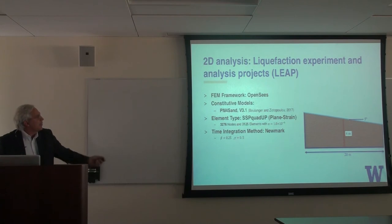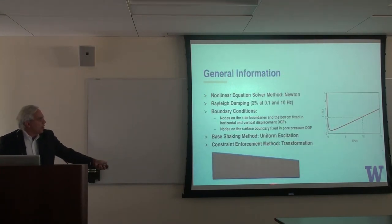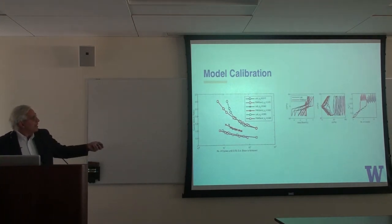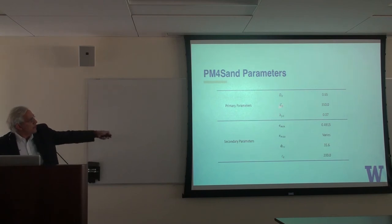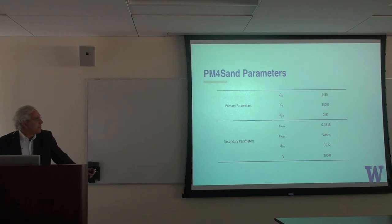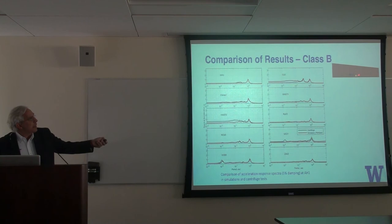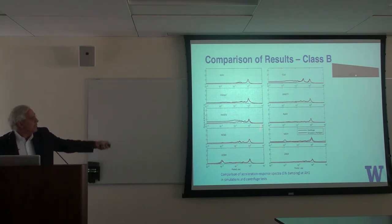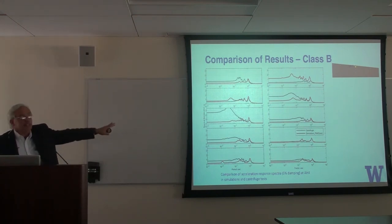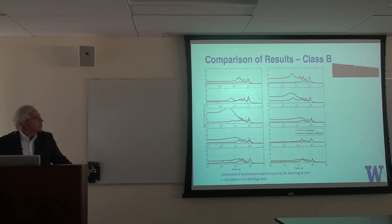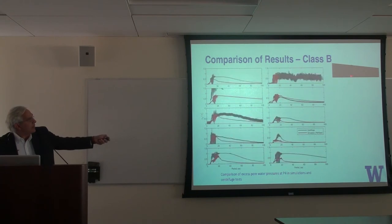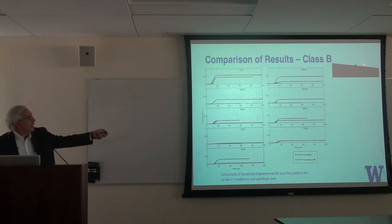We then moved to a 2D case, looking at experimental results from the LEAP project funded by the National Science Foundation. It is difficult to model the boundary conditions exactly, and also to model the damping characteristics of the system. We calibrated the three primary parameters using experimental results from triaxial tests, and also adjusted a couple of the 24 optional parameters. What you see are acceleration response spectra at the bottom and surface compared against 10 different centrifuge tests, pore water pressure ratios, and lateral displacements recorded at a point. The variability is not so bad when you consider that even experiment-to-experiment comparisons show a lot of variability.